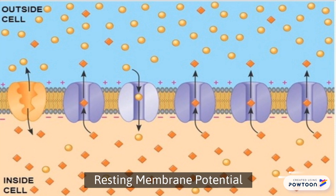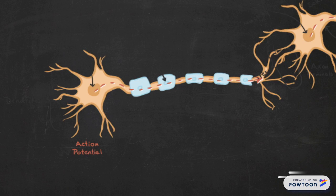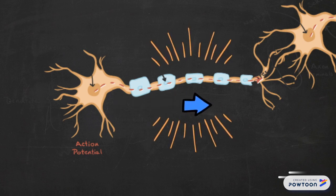When the body receives a stimulus, a sodium channel on a nerve cell will open, allowing sodium ions in and increasing the charge inside the cell. Afterwards, the potassium ion channels open, releasing potassium ions and rebalancing the charges. When the action potential sends an electric signal down its axon, it hits a synapse that converts it into a different type of signal readable by another neuron.